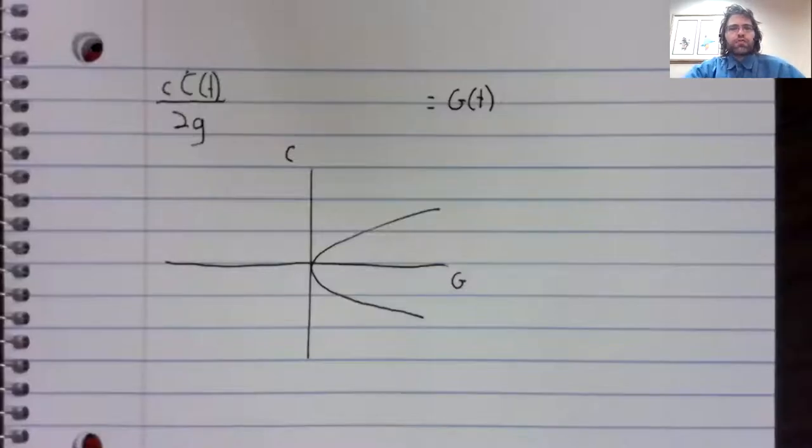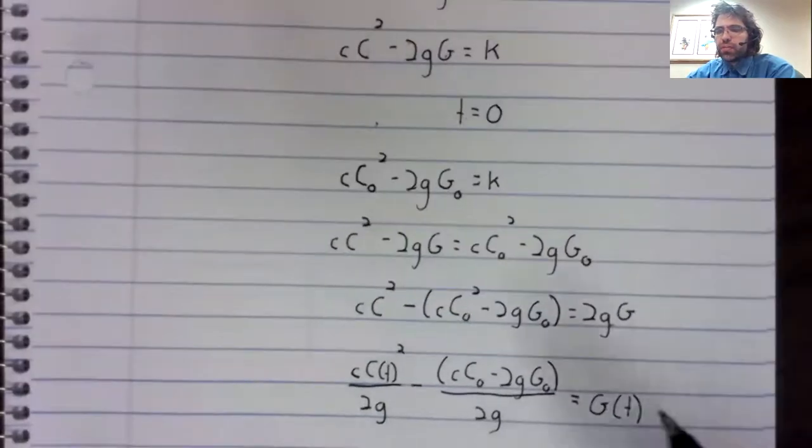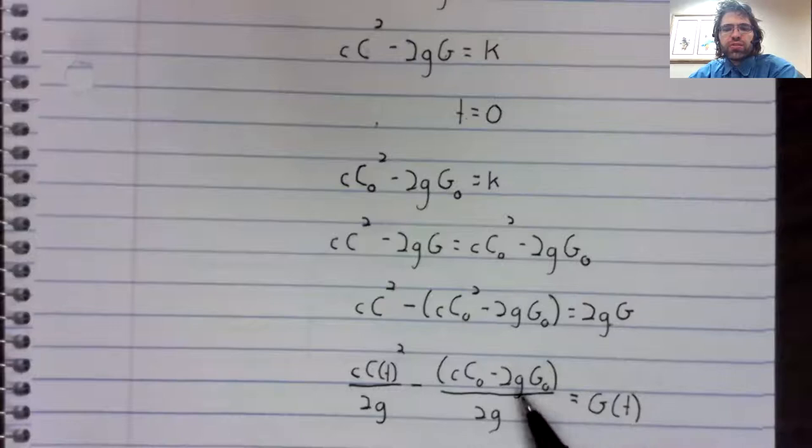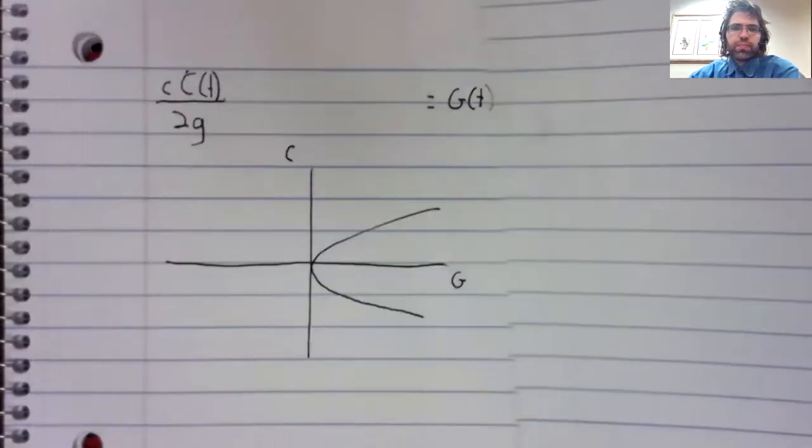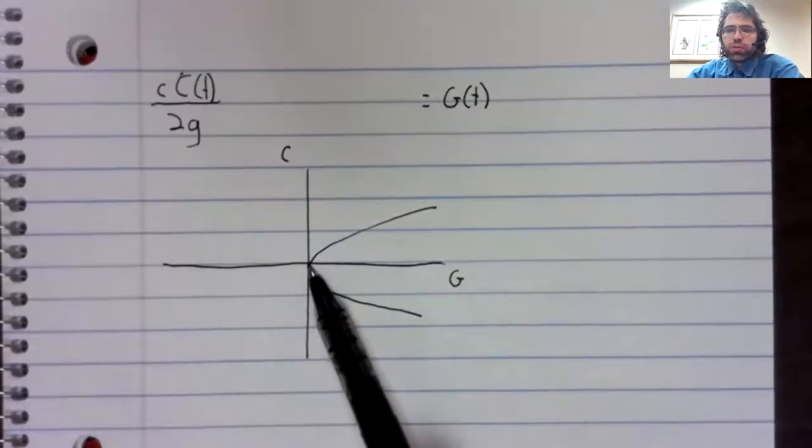I've graphed part of this equation. I've set this equal to this and I've ignored this subtraction. Without the subtraction, we get a parabola with its vertex at the origin.